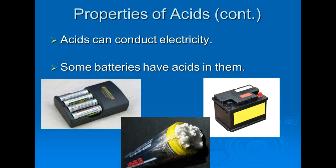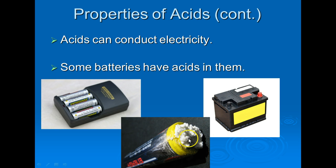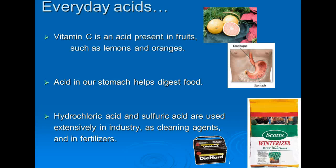Acids can conduct electricity, and some batteries have acids in them — that's why we put acid in batteries. Examples include double-A batteries and car batteries. You can see cases where acid has eaten through the battery casing and is coming out. If you see that happen, make sure you dispose of the battery properly.